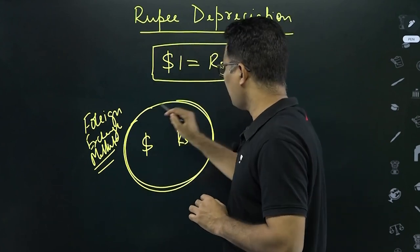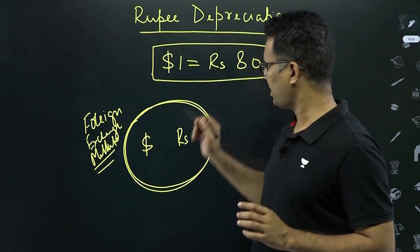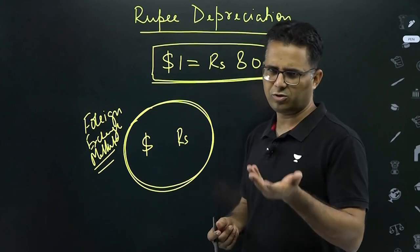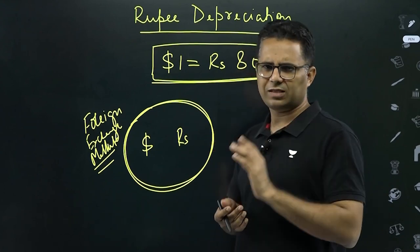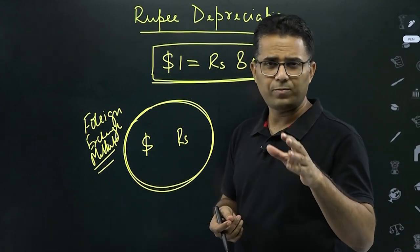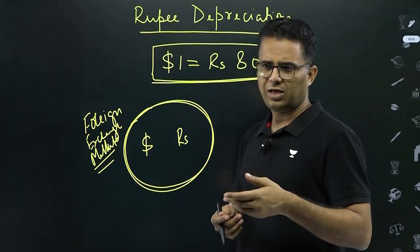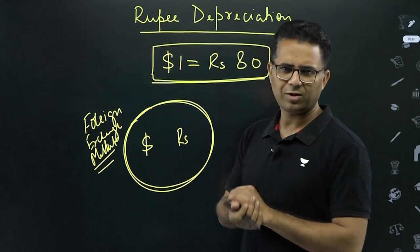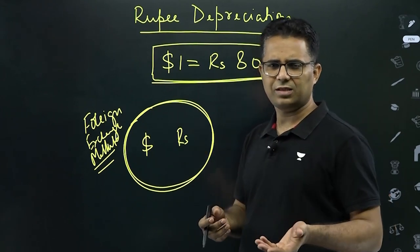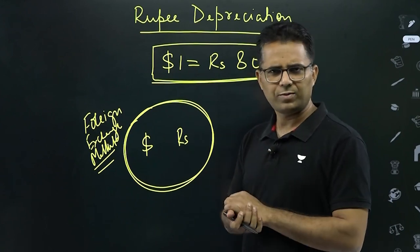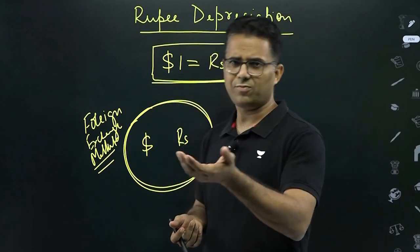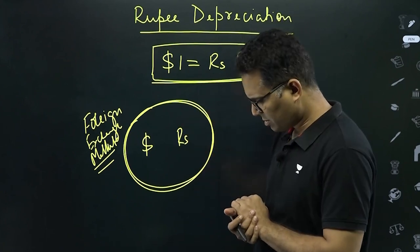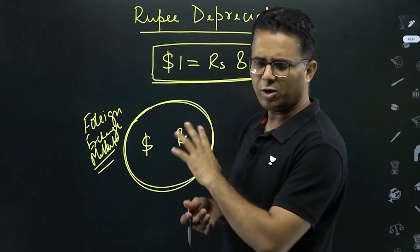Based on the demand and supply of rupee and dollar, this rate is determined. If the demand of rupee is more, rupee will appreciate. If the demand of dollar is more, dollar will appreciate. It depends on these two factors. But demand and supply of rupee and dollar depends on several other factors — if foreign investors are moving in or out of India, if students are going abroad for studying or people are going for tourism, or if we are importing a lot — all these can impact the rupee-dollar rate.